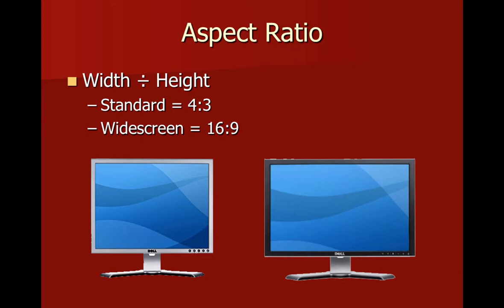A standard display would be 4 by 3 — on the bottom left you can see a pretty standard looking computer monitor. On the bottom right is a widescreen monitor with an aspect ratio of 16 by 9. Keep in mind this isn't inches or feet — 16 by 9 is just a generic unit of measurement; it's a relative size. Also worth noting: even though the widescreen monitor on the right is a larger physical monitor, its display setting is actually lower, so you can see less of the blue wave image. The physically smaller monitor on the left has a higher display setting, so you can see more of the image.